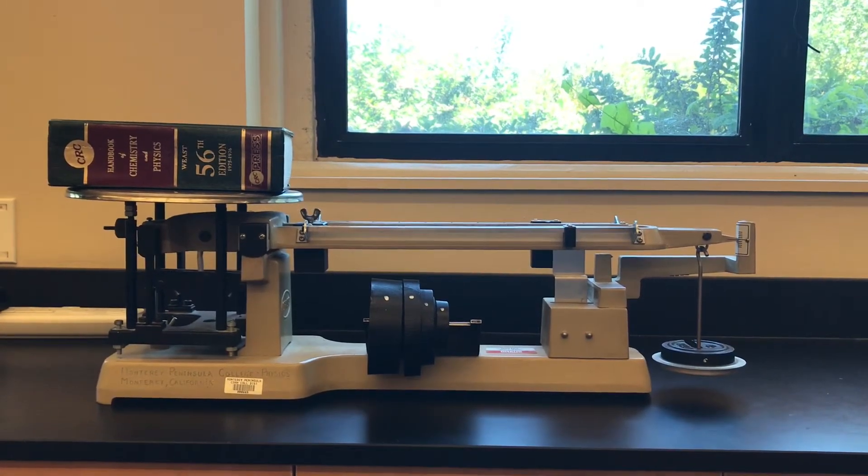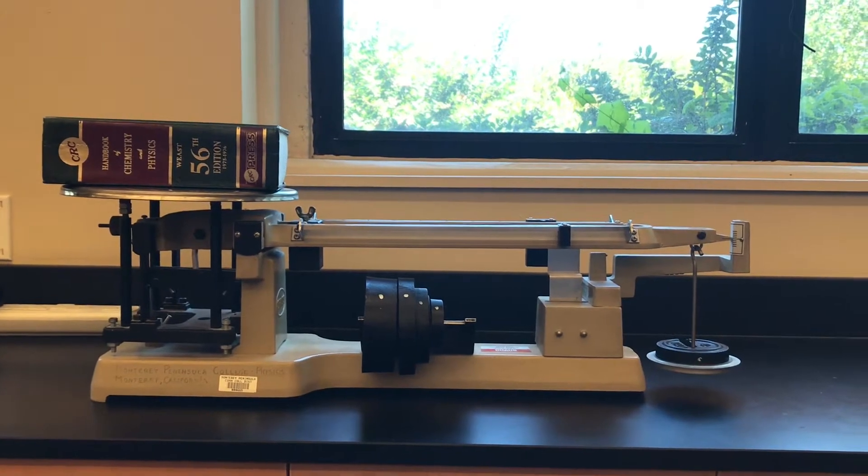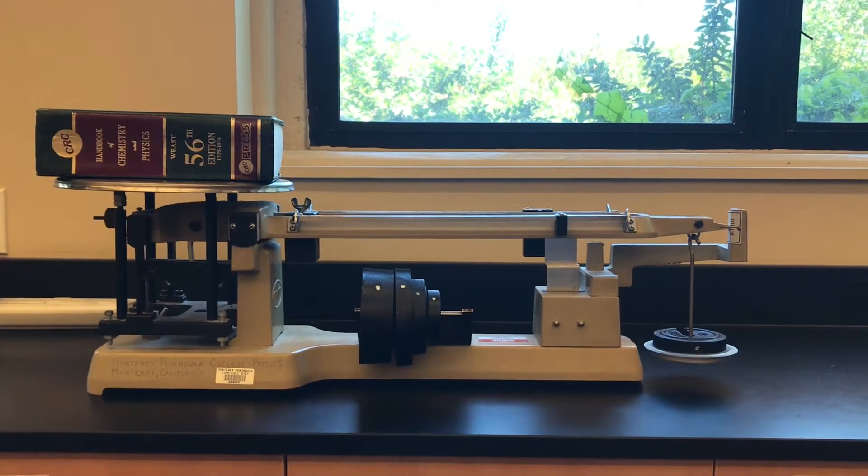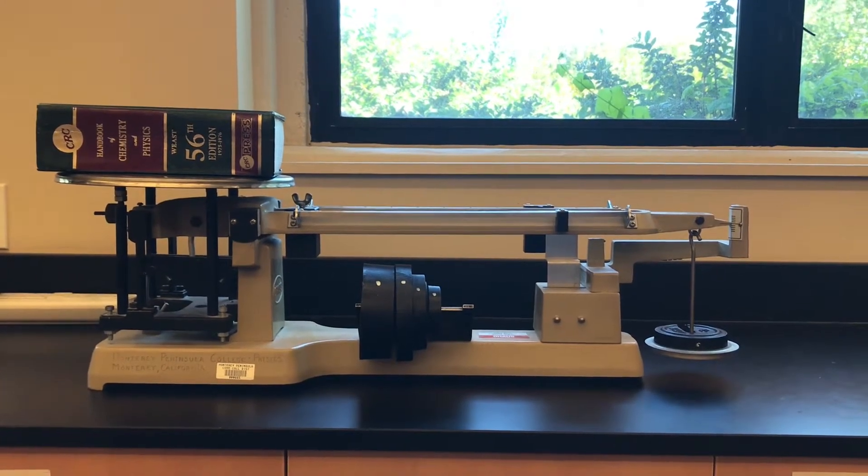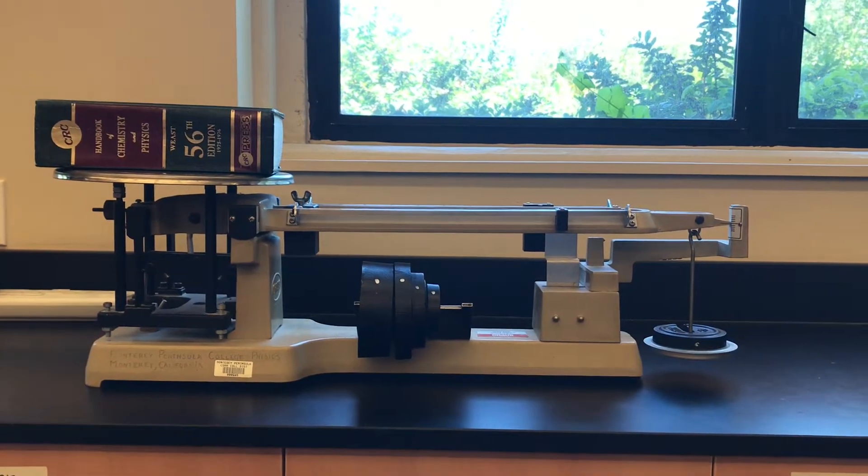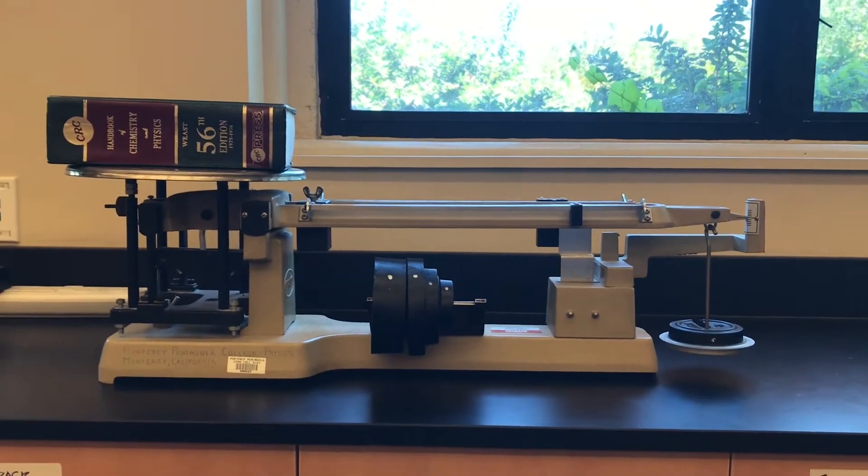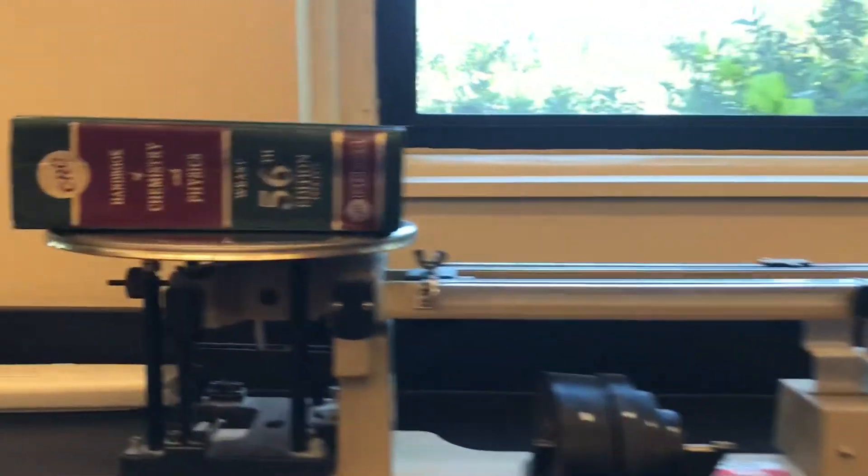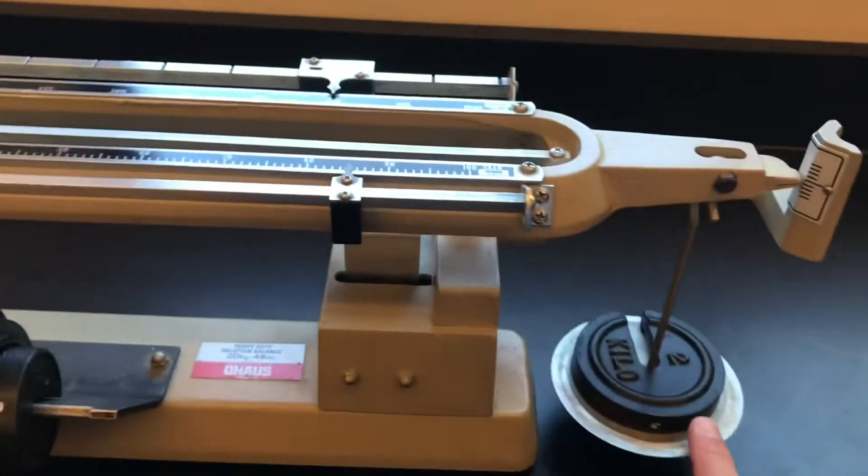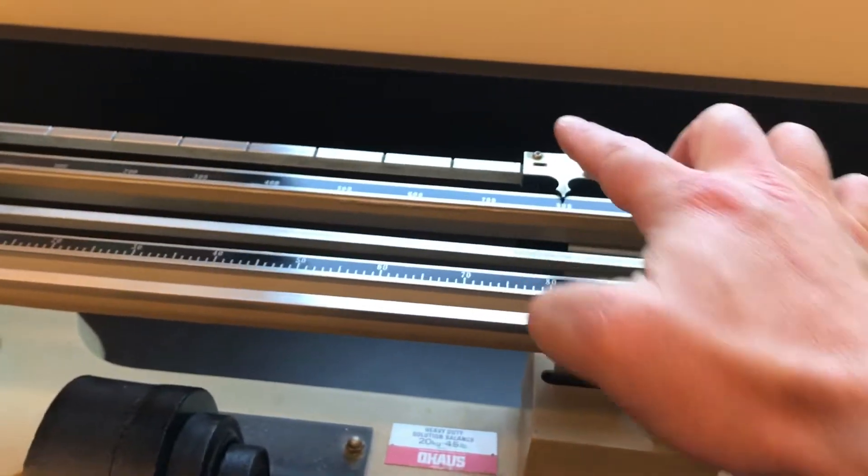This is our unequal arm balance. You can see the book in the balance pan on the left, and on the right is the counterbalance that's referred to in the lab. One thing to note is that the weight of the book over here is actually counterbalanced by multiple components. There's the pan counterbalance down here and these sliding counterbalances.